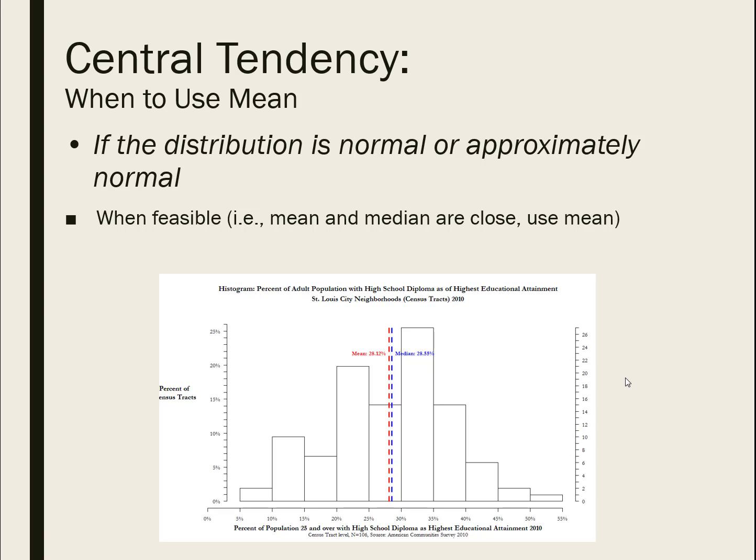If your distribution is normal or normal-ish, you want to use the mean, because people tend to understand it — it's a more accessible term than the median. Both are types of averages, so when someone just says 'the average,' they could be talking about either. Once you understand the difference between median and mean and people willy-nilly use the term 'average,' it starts to drive you a little bananas.